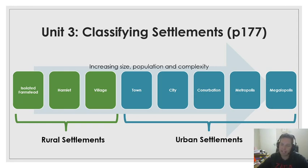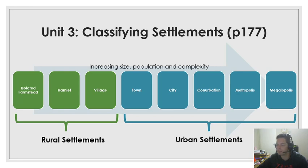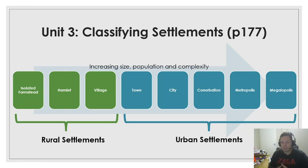Now we can start to classify settlements. So now we know why they are there, we know what site and situation is, we know what rural means, we know what urban means. And now we can see how do we classify settlements. Basically it works that we give settlements names based on their size and based on their complexity — and complexity means how many services there are, how many functions they have.